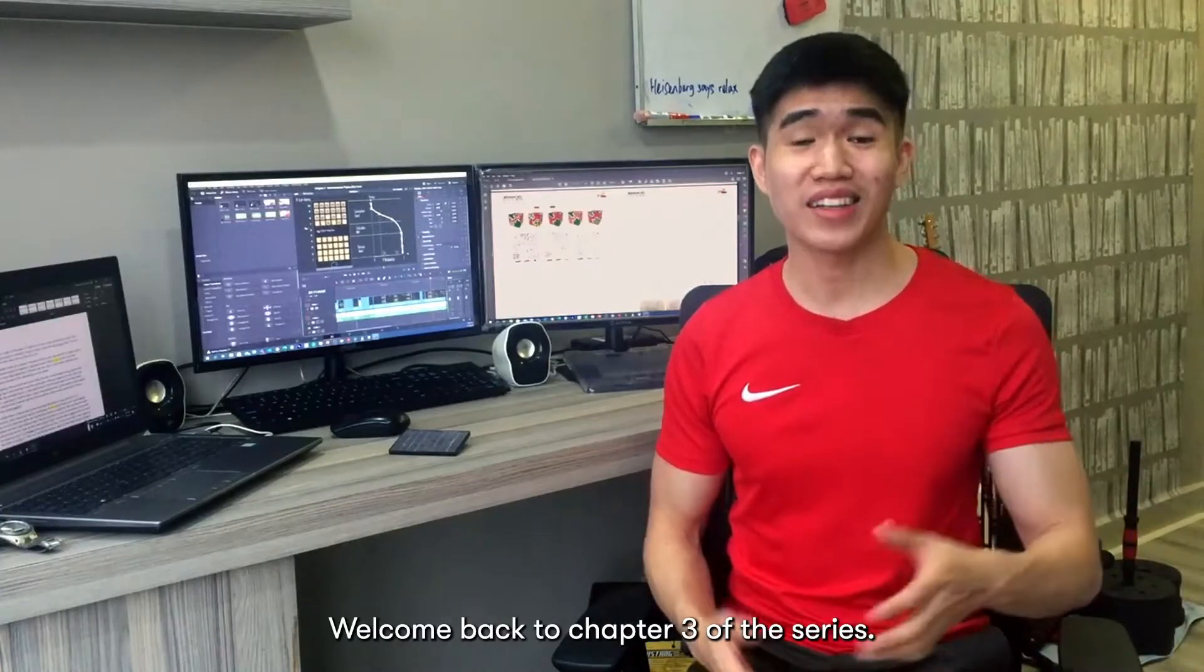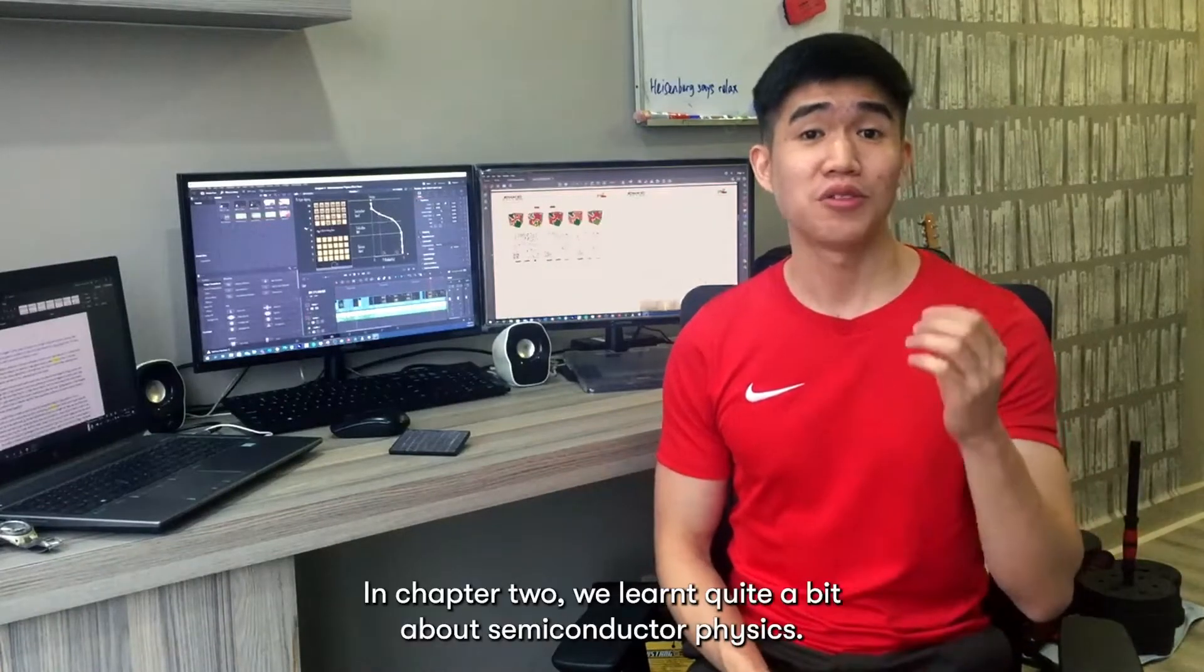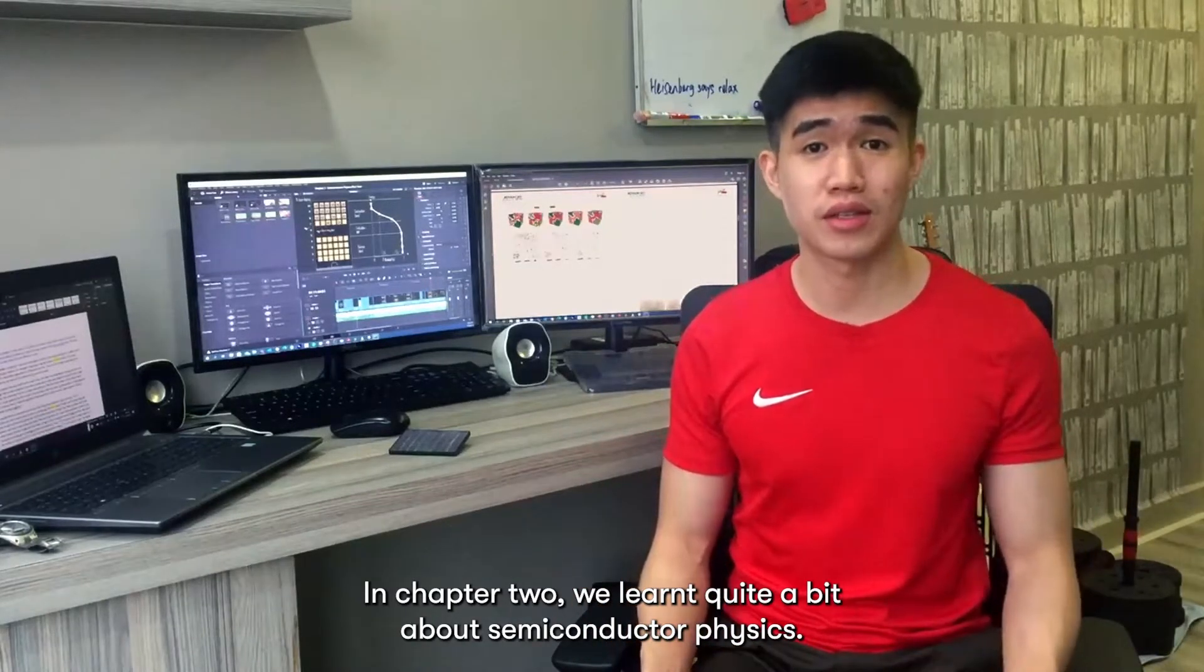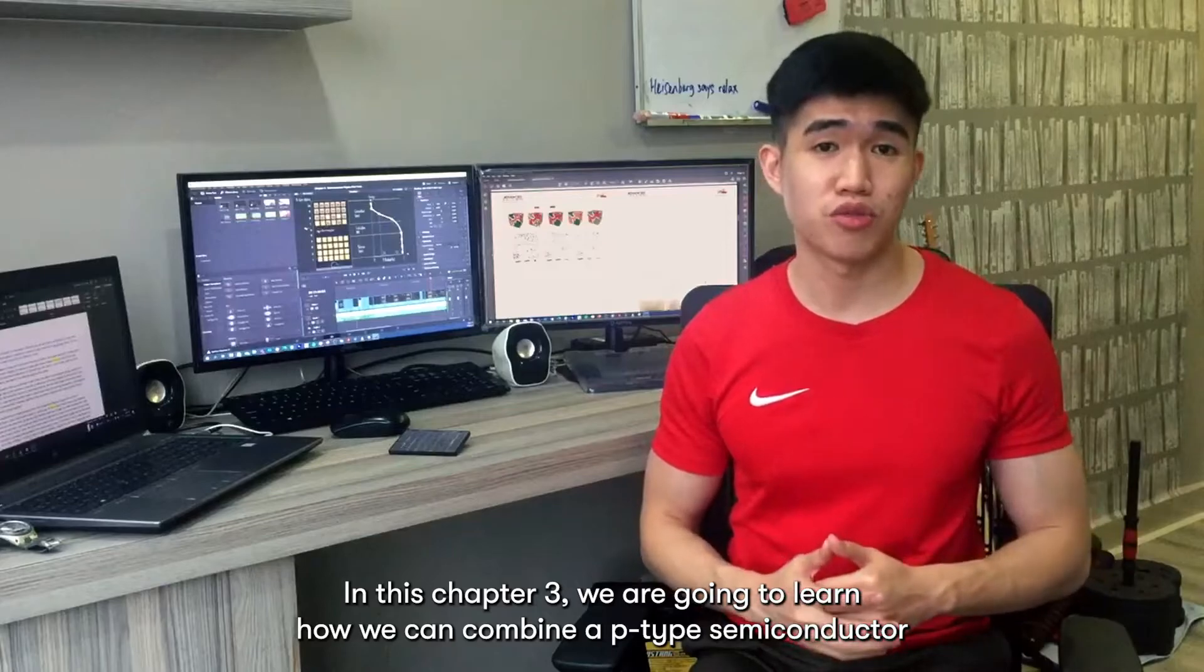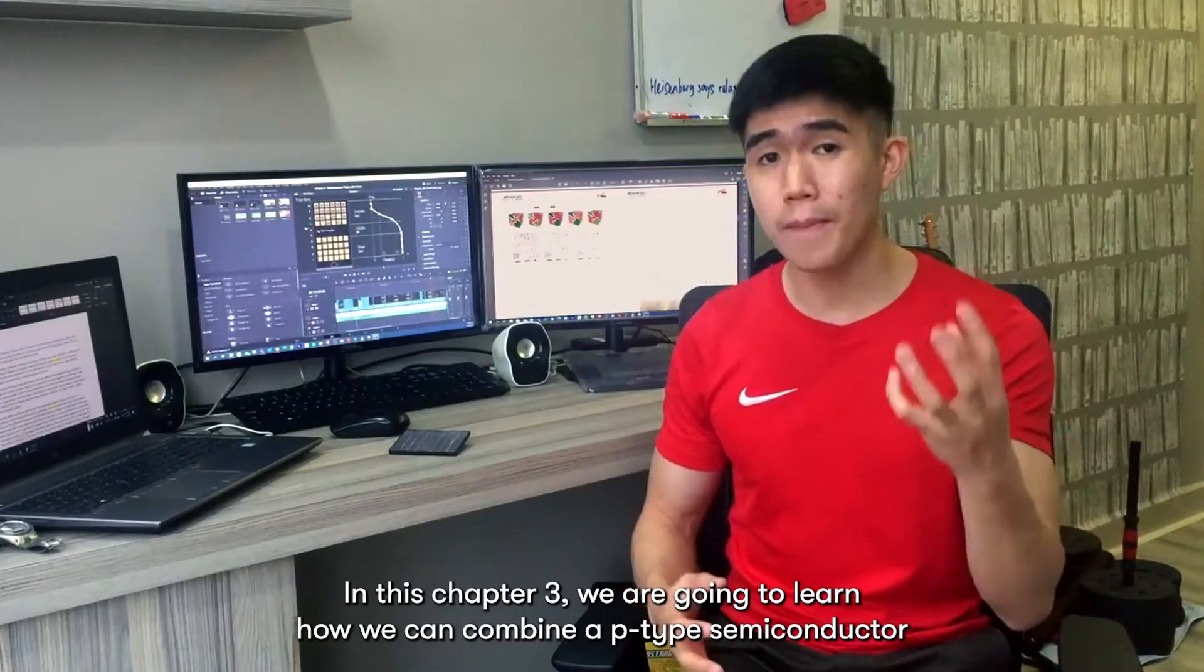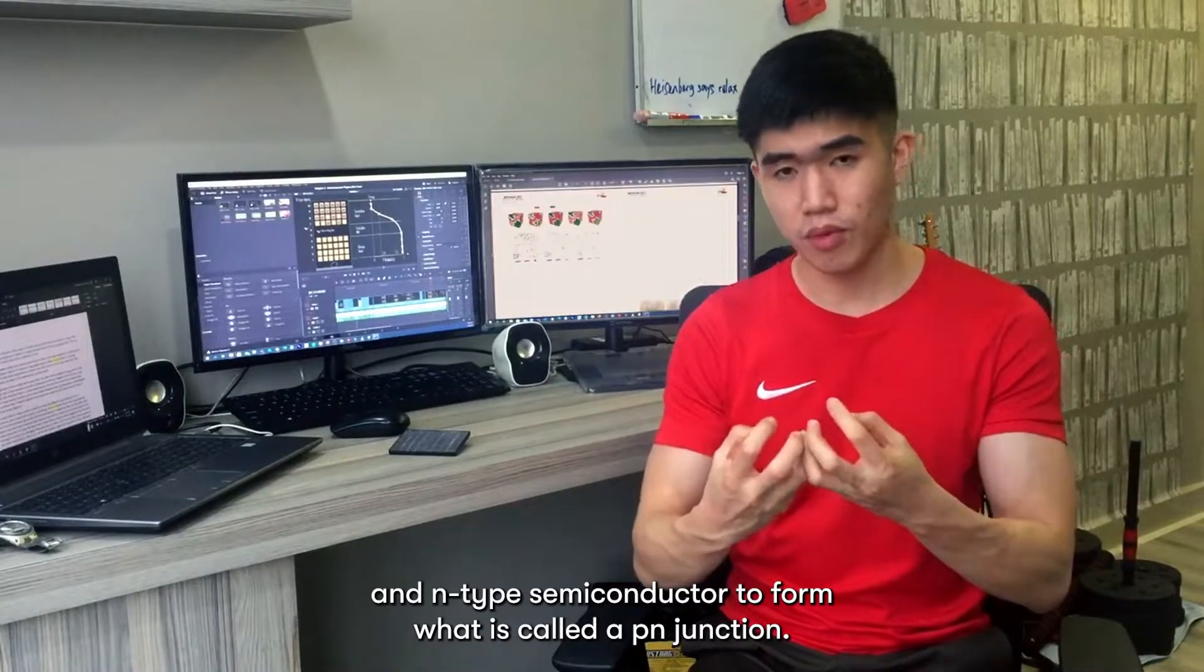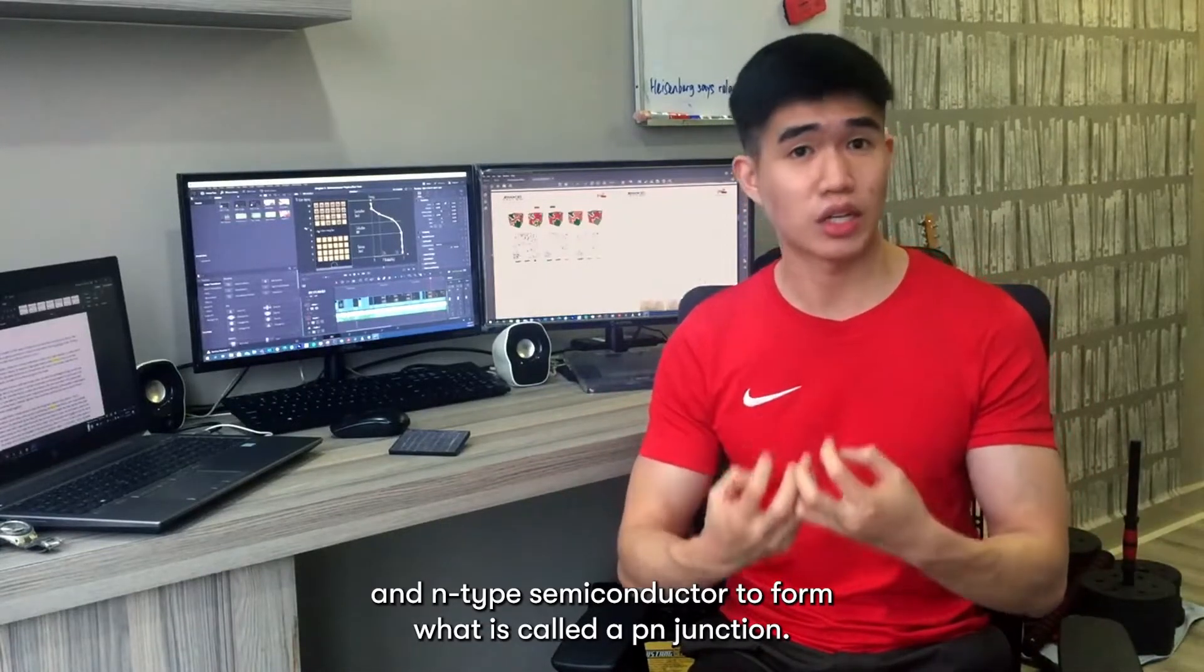Hey, what is up guys? Welcome back to chapter 3 of the series. In chapter 2, we learned quite a bit about semiconductor physics. In this chapter 3, we are going to learn how we can combine a p-type semiconductor and n-type semiconductor to form what is called a p-n junction.